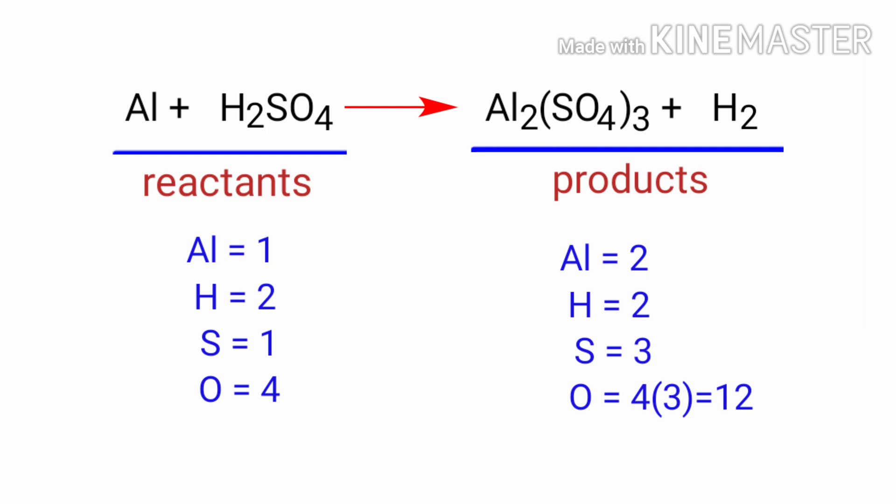The number of atoms are not balanced on both sides. To balance the chemical equation, we need to make use of coefficients. A coefficient is a number that we place in front of a chemical formula.